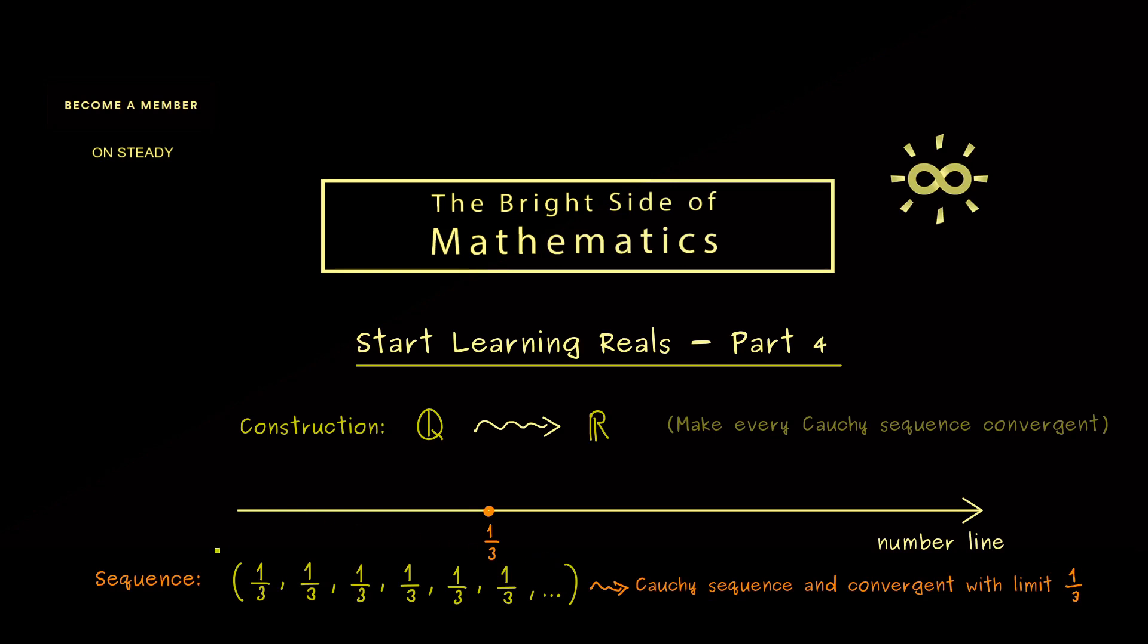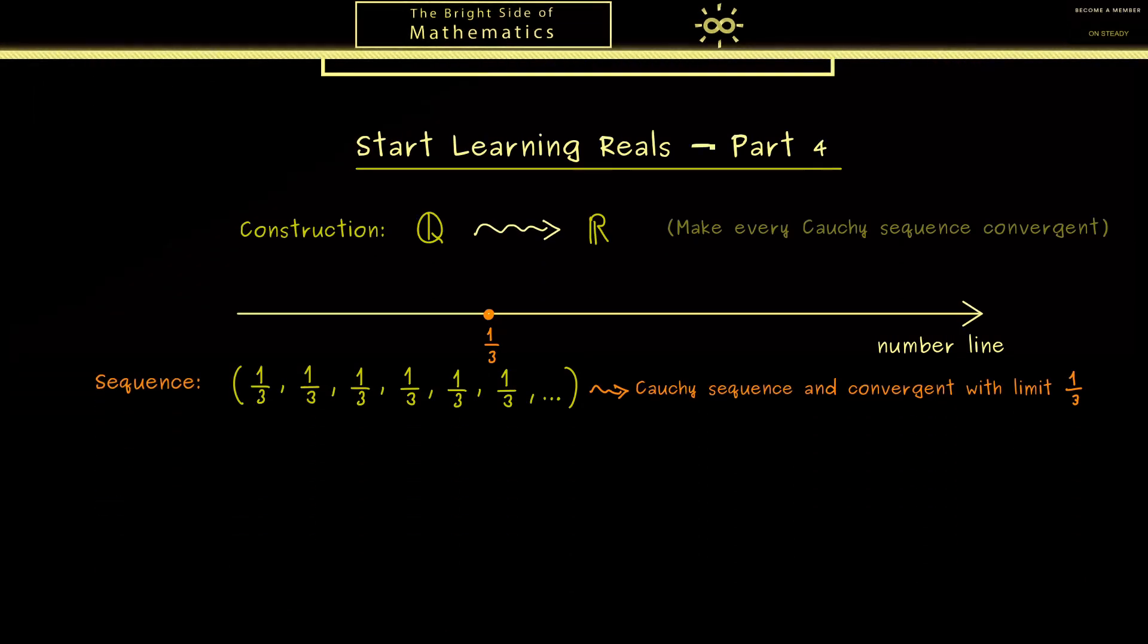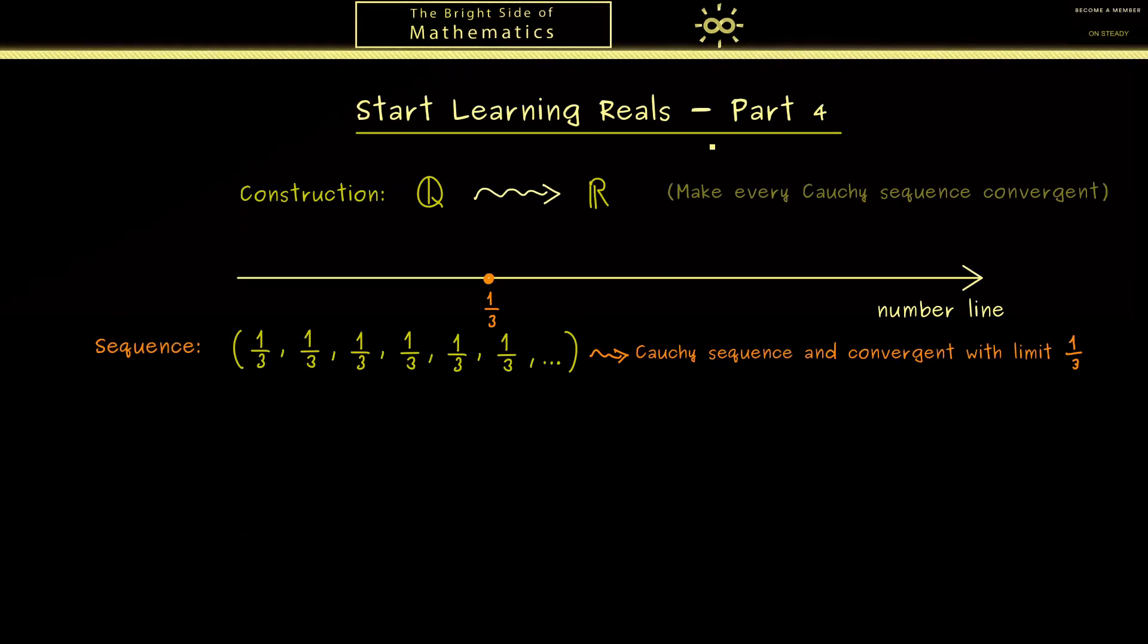Therefore, this infinite sequence of numbers represents one point on the number line. But now you should see that this representation cannot be in any way unique, because we can just write down another sequence with the same limit.